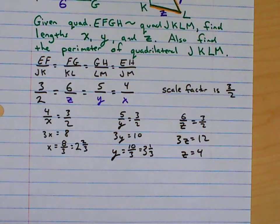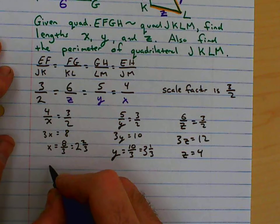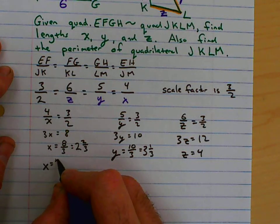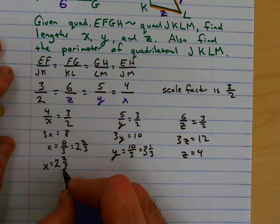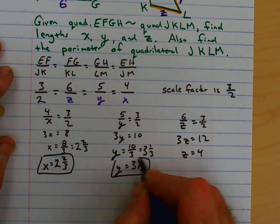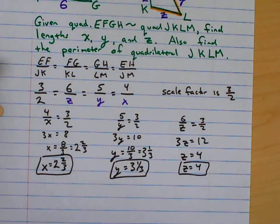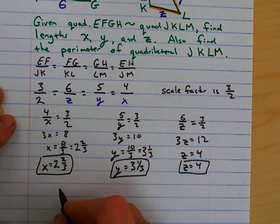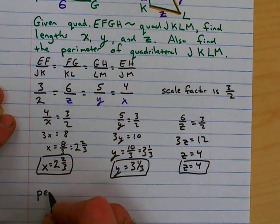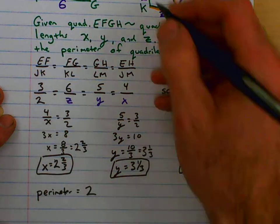So now, I have those values. They said they wanted us to find the lengths x, y, and z. And then they want us to find the perimeter. Well, we can't forget JK as well. So we're going to add 2.